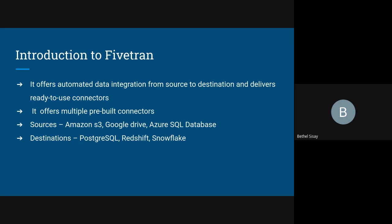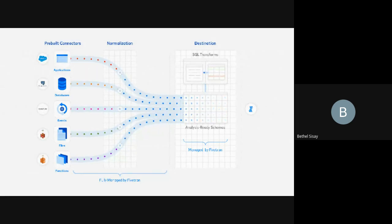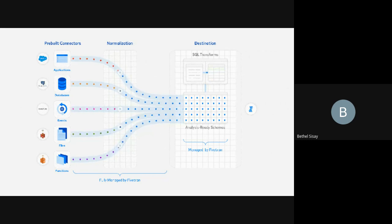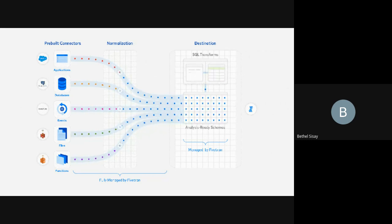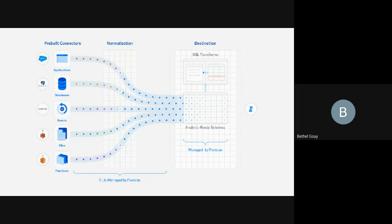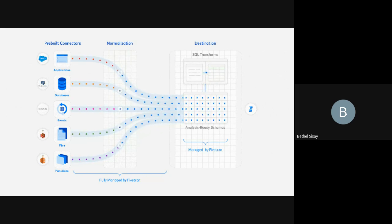The sources it can retrieve data from are numerous, including Amazon S3, Google Drive, and other SQL databases. You can also select different destinations like PostgreSQL, Redshift, or Snowflake. Fivetran can connect to a bunch of different sources and load data into your data warehouse on an automated schedule. Once the connector ingests the query result data, Fivetran will also normalize and deduplicate that data — normalization being one of the transformations it performs automatically.